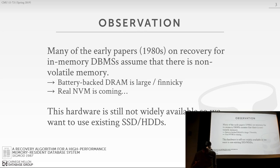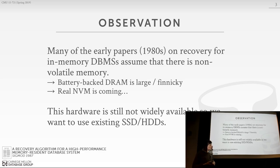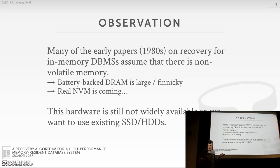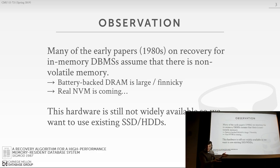If you look at the early papers on in-memory databases going back to the 1980s when these things were first being built, they made a huge assumption: they were going to rely on non-volatile memory as the backing store of the database. Back then, non-volatile memory was essentially battery-backed DRAM, meaning that if you lose power, a little battery would have enough juice to take the contents of DRAM and write it out to stable storage — like a spinning disk hard drive or an SSD today.